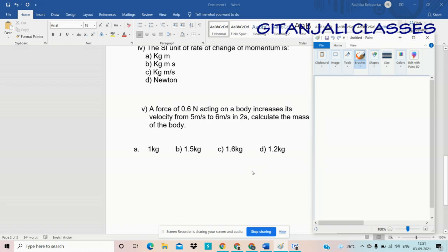Fifth question in this case study: A force of 0.6 N acting on a body increases its velocity from 5 meter per second to 6 meter per second in 2 seconds. Calculate the mass of the body. Now F equals mass into acceleration. So acceleration is V minus U by T. The initial velocity is 5 meter per second and final velocity is 6 meter per second.